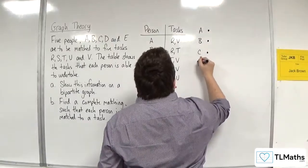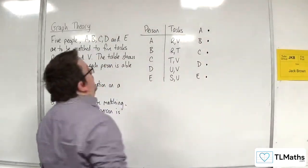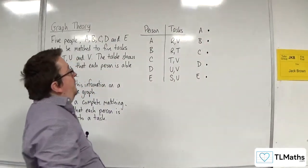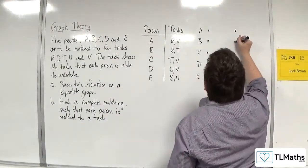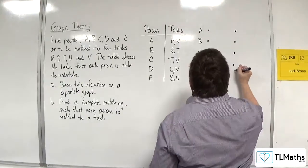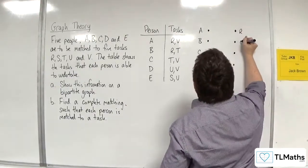So A, B, C, D, and E. Don't forget to label. Then we've got the tasks, R, S, T, U, and V. Make sure you label those.